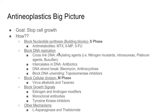The second thing we can do is block DNA replication itself. Even if you have the nucleotides, we can block replication by cross-linking the DNA — making the two strands stick together. This is achieved by the alkylating agents: the nitrogen mustards, nitrosoureas, platinum agents, and busulfan.